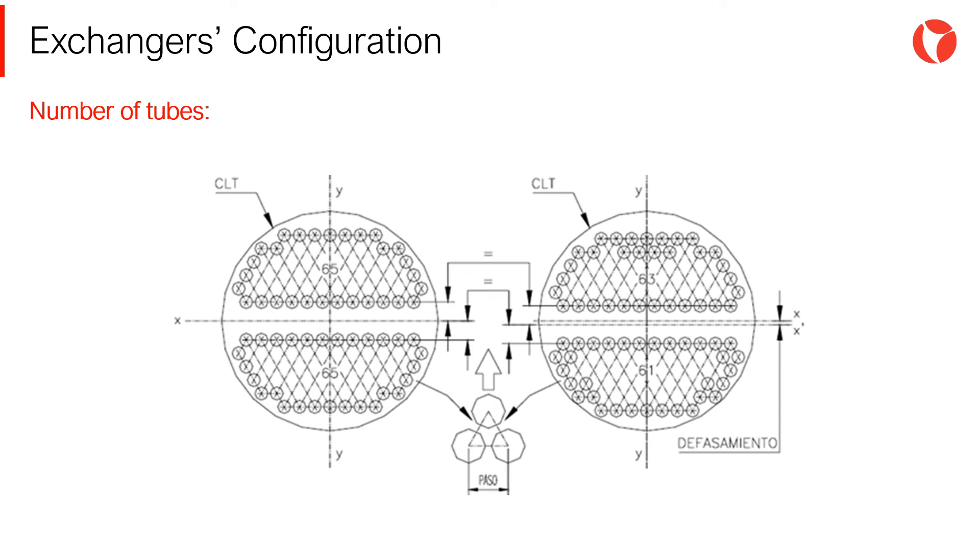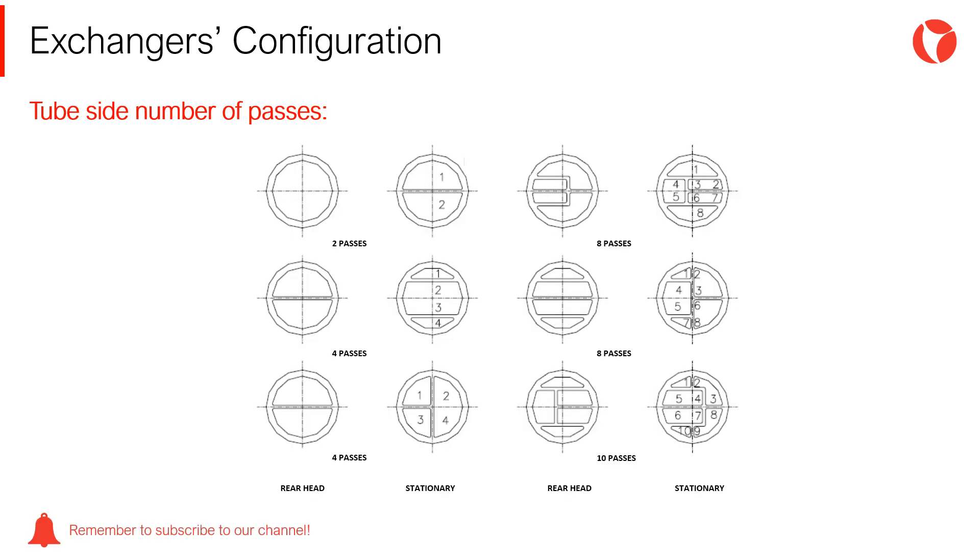When the number of passes is bigger than one, the same amount of tubes shall be arranged on each pass partition. This condition is not always met. At most, a 3% maximum difference in the number of tubes between passes may be accepted. The arrangement of partition plates in stationary rear or floating heads determine the number of times the tube side fluid changes direction. This is the number of passes of a shell and tube heat exchanger.